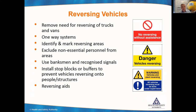In terms of reversing vehicles, where possible remove the need for reversing of trucks and vans by putting in place a one-way system. If that's not possible, identify and mark reversing areas — vehicles go to that area to turn and reverse, that area can then be controlled, excluding non-essential personnel. If necessary, put a banks man in place to assist with reversing and keep people out of that area. Install stop blocks and buffers to prevent over-reversing. Vehicles that do reverse should, where possible, be augmented with reversing aids like mirrors and cameras.